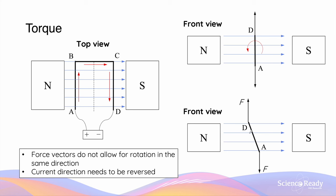The problem is that the forces acting on sides CD and AB will remain in the same direction as before. Specifically, the force on side CD will still go upwards because the current direction is still going from C to D, and the direction of the magnetic field has not changed.